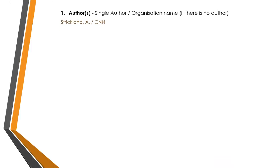Firstly, you have to know the author's first and last name. You have to present the last name first, followed by the first name in this order. If there is no author, then you may include the publisher's name first, which is CNN in this case.